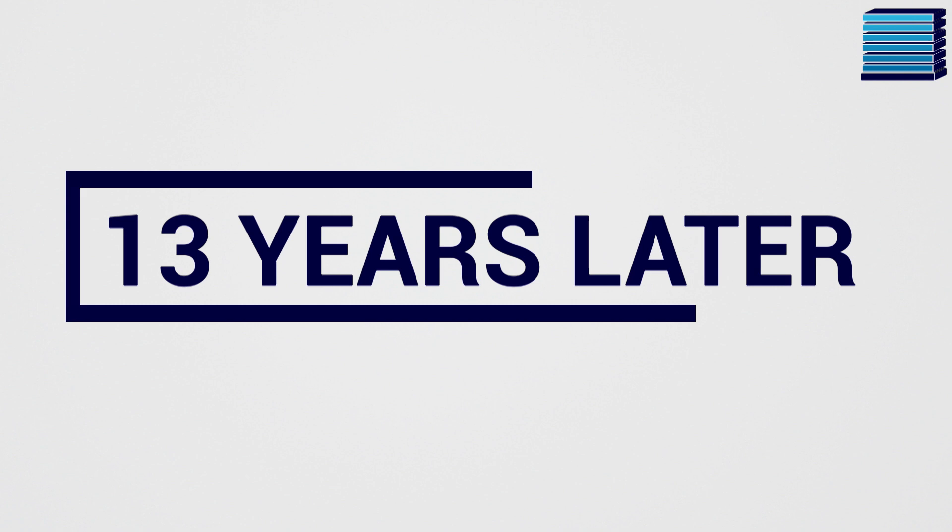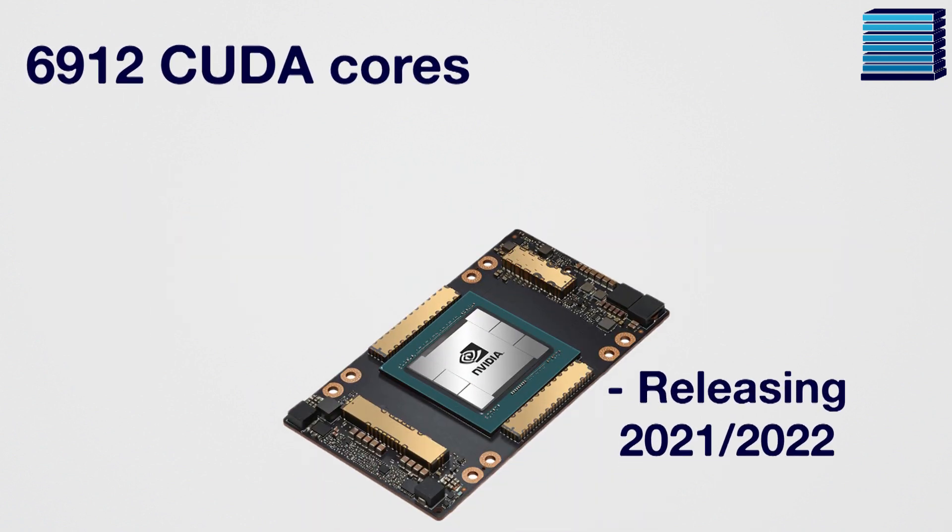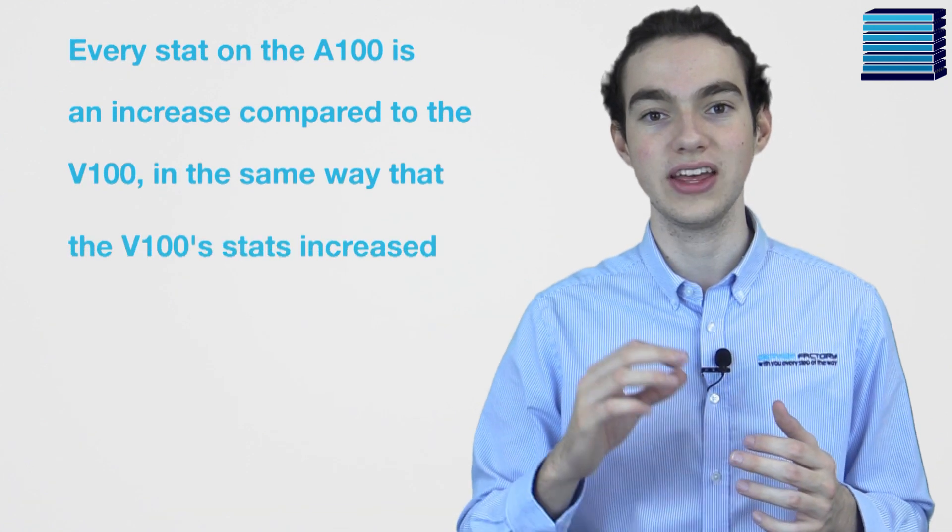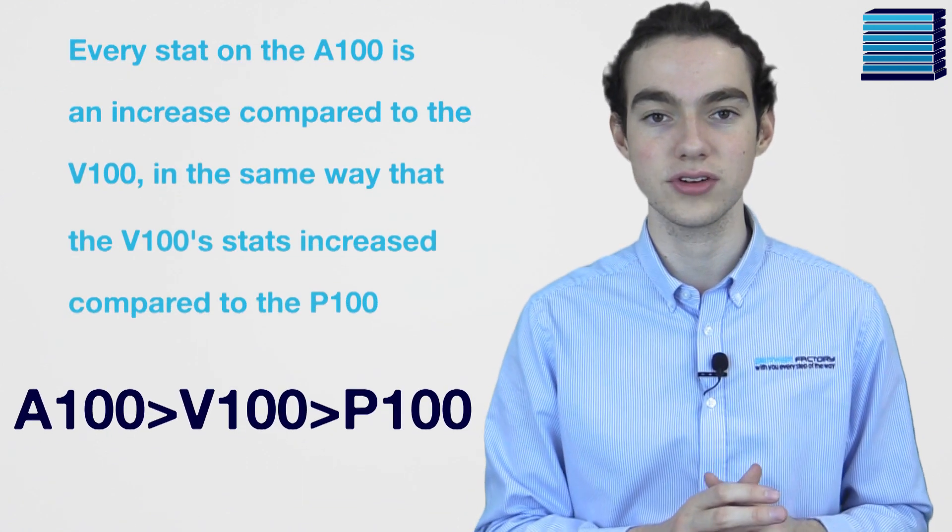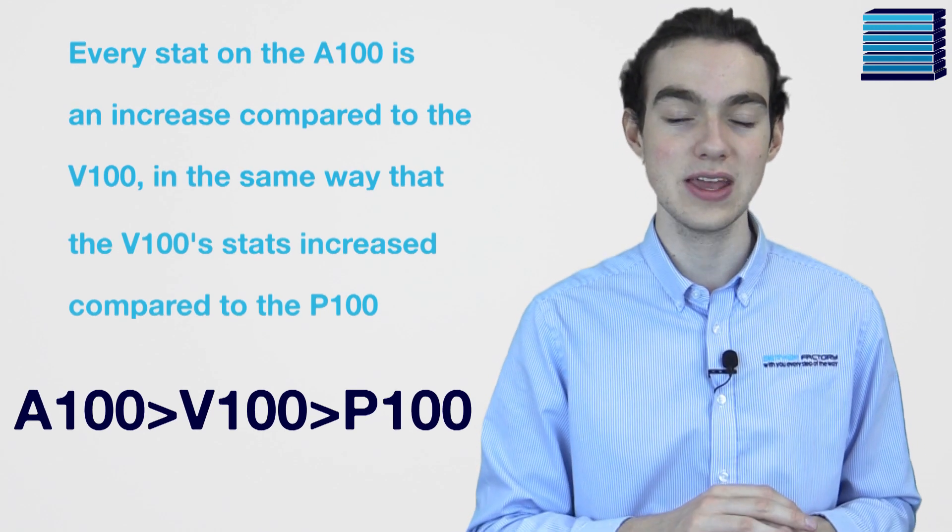And now, 13 years after the original, the new A100 has 6,912 CUDA cores, 40GB of memory, and performs at 19.5 TFLOPs. A good way to sum that up is just about every stat on the A100 is an increase compared to the V100, in the same way that the V100's stats increased compared to the P100.